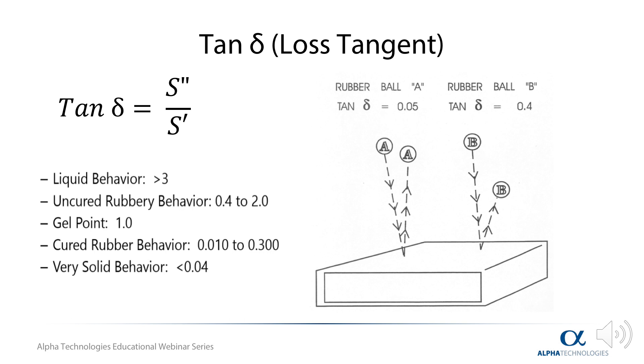A cured compound with a very low tan delta will be very resilient, have high rebound, and low hysteresis. Hysteresis relates to energy dissipation, which can be described as the energy loss during the deformation cycle. In this case, that lost energy translates to heat buildup.